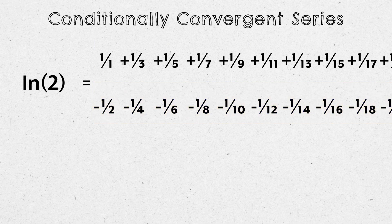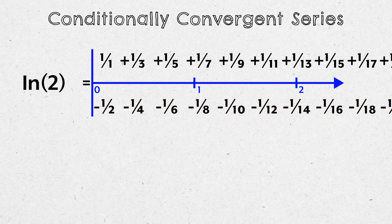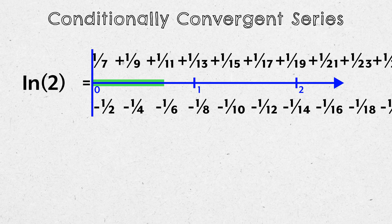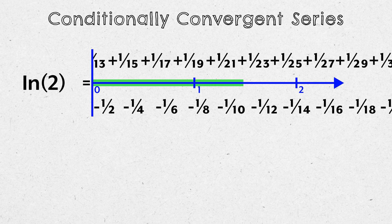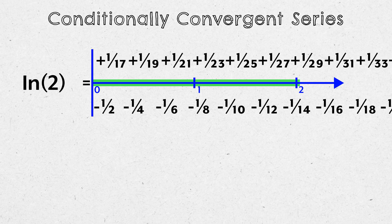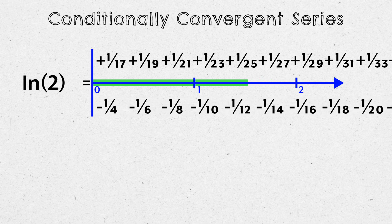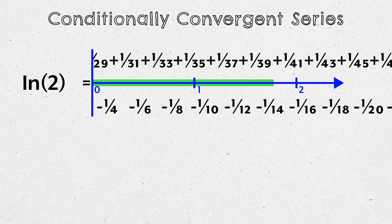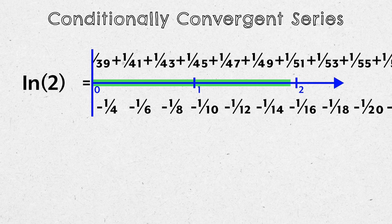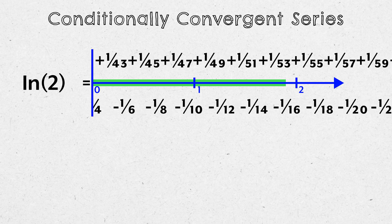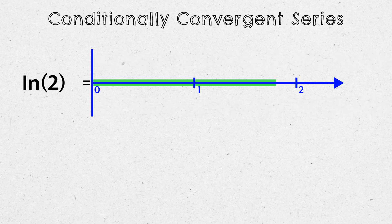So if we pick any real number, like 2, we can add up the first few positive terms to bring the partial sum above 2, then add the first few negative terms to bring it below 2, then add the next few positive terms to bring it above 2, then the next few negative terms to bring it below 2, and so on — with the partial sums oscillating around and converging to 2.